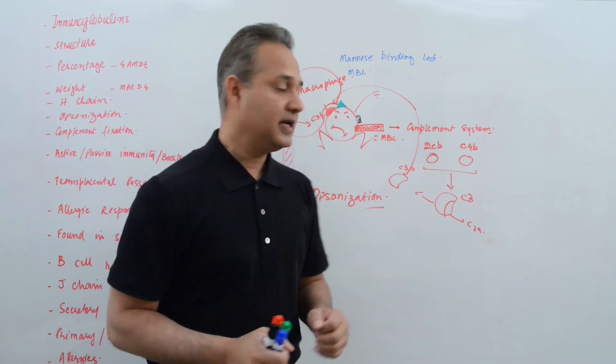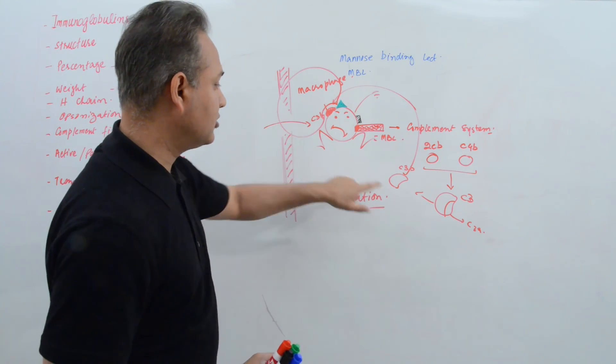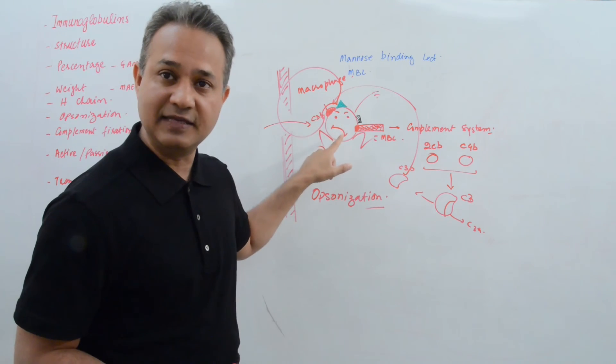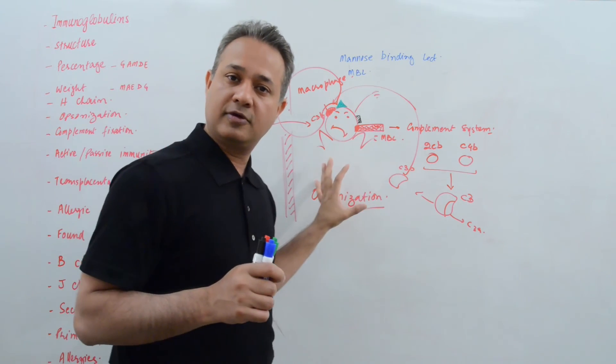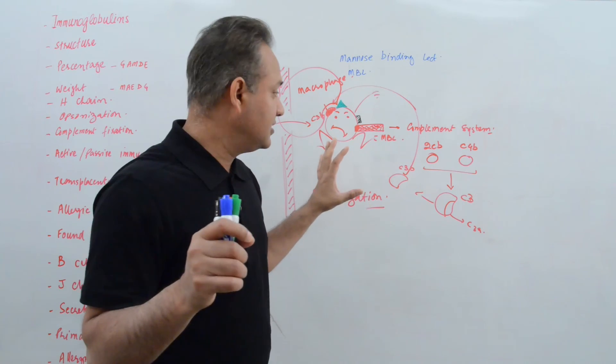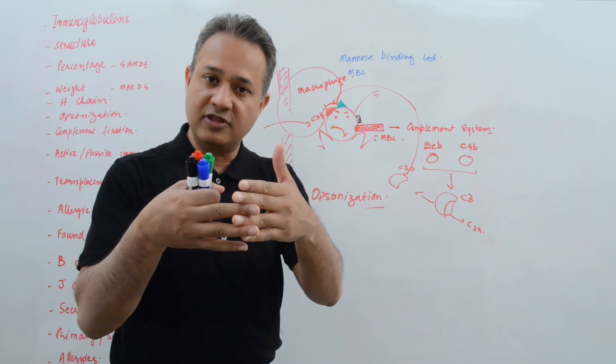All right, so we are back and now we're talking about how the C3B opsonized the pathogen and the macrophage ate that. There is a reason that I'm touching on complement. The reason is that it works together with the immunoglobulins.